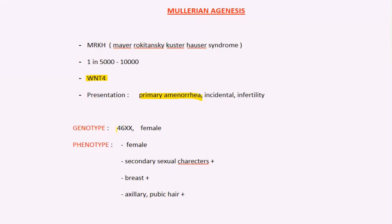The genotype is 46XX — female. The phenotype, or external appearance, is also female. Secondary sexual characters like axillary and pubic hair development are normal, and breast development is also normal. The only problem is the absence of the uterus, cervix, and vagina; the ovaries, fallopian tubes, axillary hair, pubic hair, and breasts are all normal.